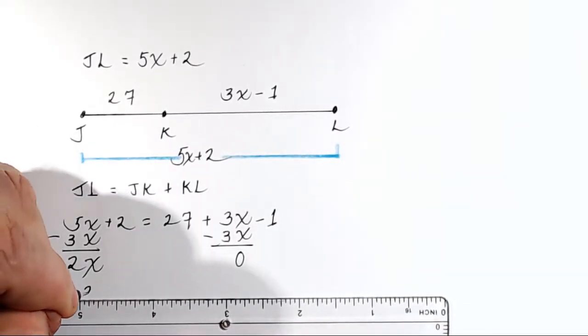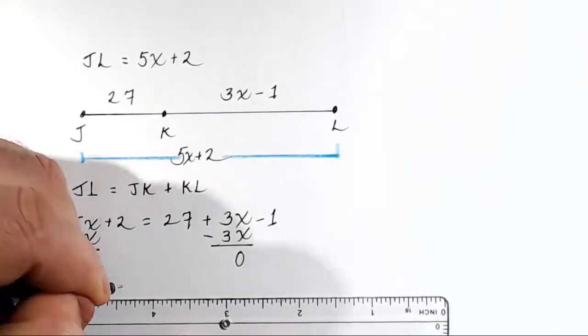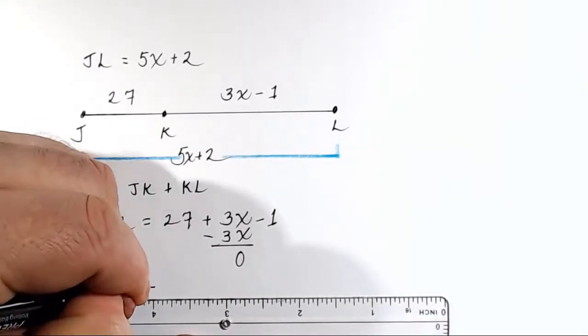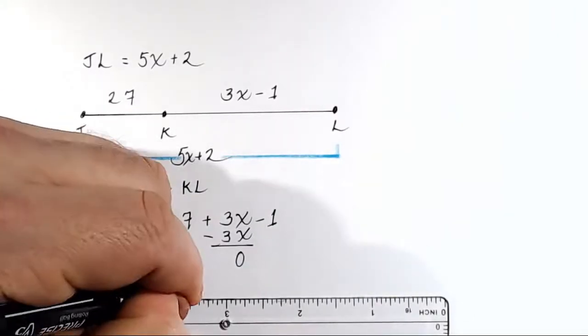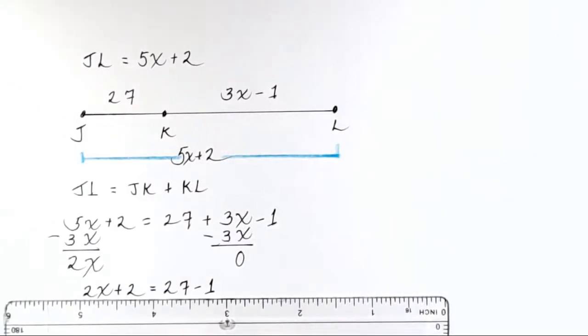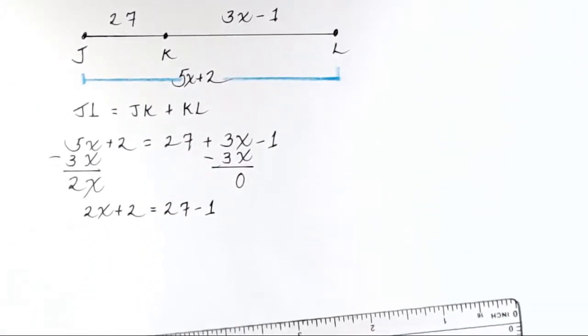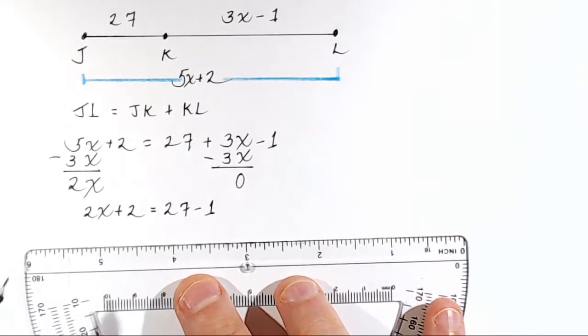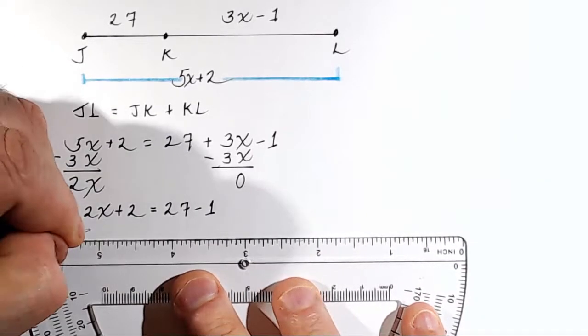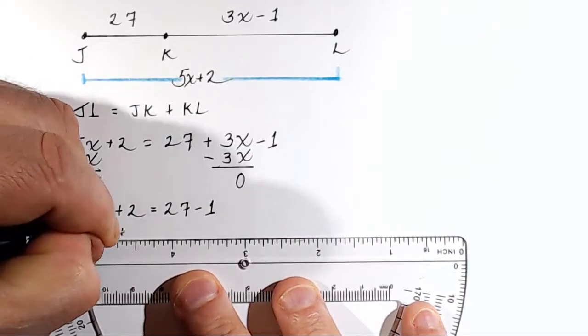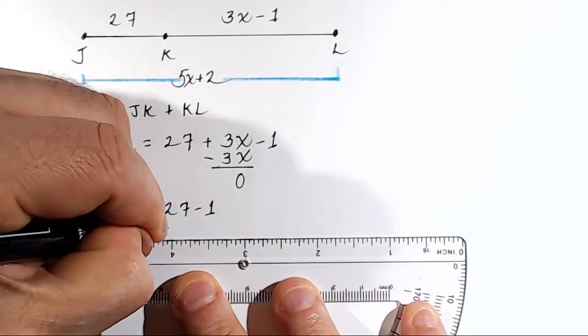So let's rewrite the problem and see where we're at. We've got 2X plus 2 equals 27 minus 1. Okay? Well, let's do this step. What is 27 minus 1? 26, right? So let's just rewrite this as 2X plus 2 equals 26.